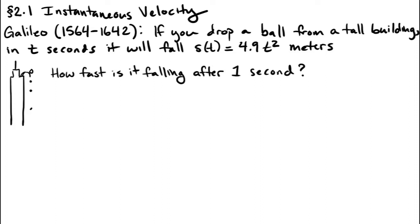So how fast is it falling after one second? We can use the same strategy as we did for the car: we should see how far it's gone in shorter and shorter intervals. And when those intervals get really, really short, we'll get a really good estimate. So we start with a biggish interval, 0 to 1. In that one second the ball travels 4.9 meters, so the average speed is 4.9 meters per second.